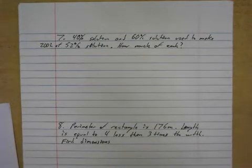Number 7. 40% solution and 60% solution used to make 200 liters of a 52% solution. How much of each are needed?